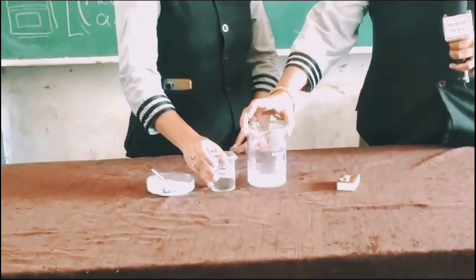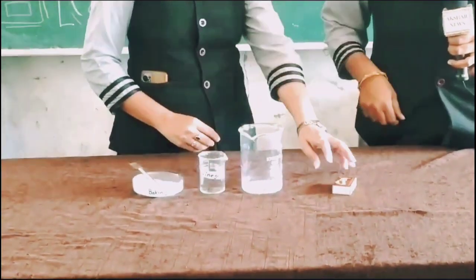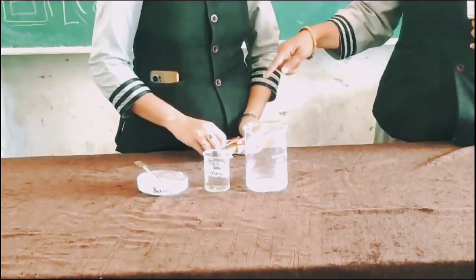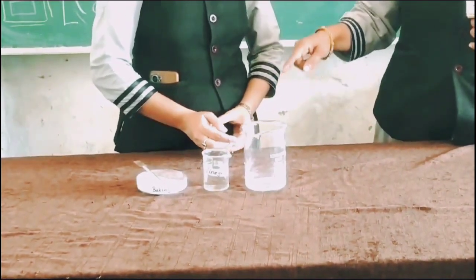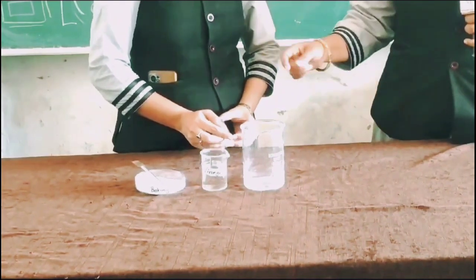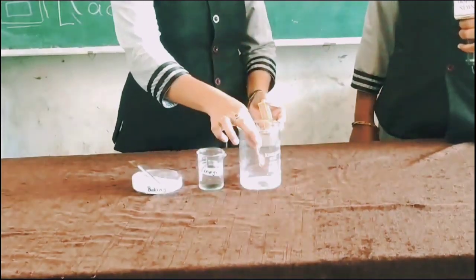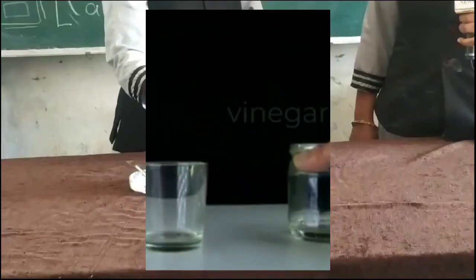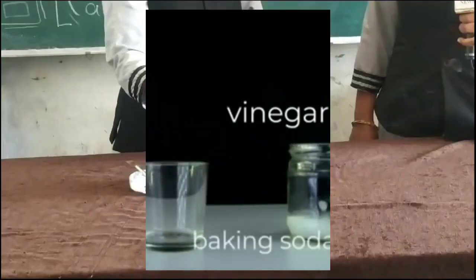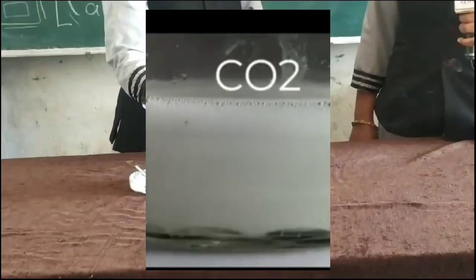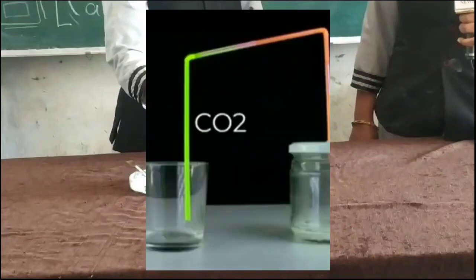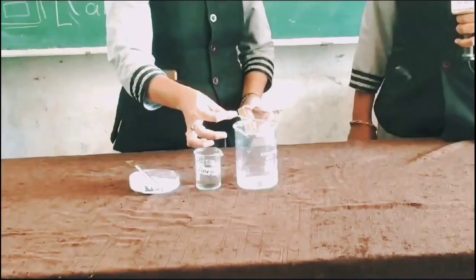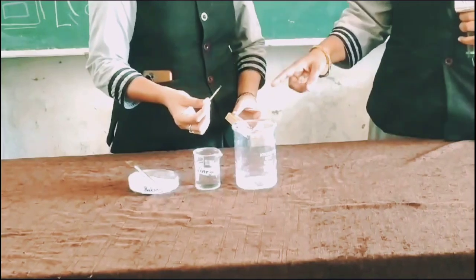Now you can see the bubbles are coming out. How can we find out which gas this is? We can use the matchbox. Just blow the matchbox near it. What do you observe? Now, the matchbox is blown out.